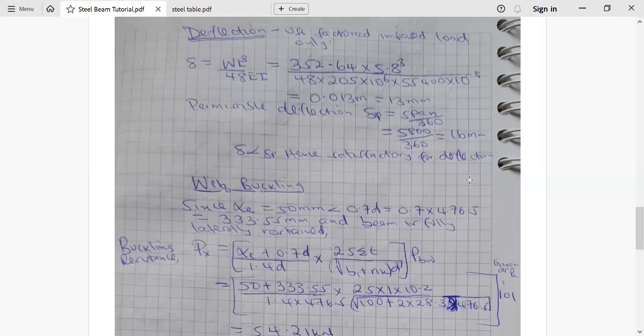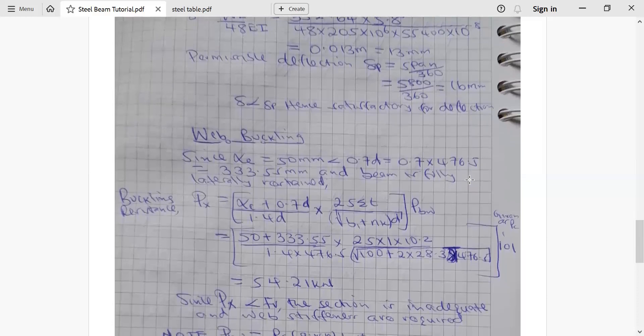We go to web buckling. Now in web buckling, we have different formula based on the condition. Our condition here is that this alpha_E is equivalent to 50 millimeter is less than 0.7 d, which is 373.17 millimeter. And beam is fully laterally restrained. That is from the equation we are told. The beam is fully laterally restrained. Now it means the buckling resistance PX will calculate using this particular formula here.